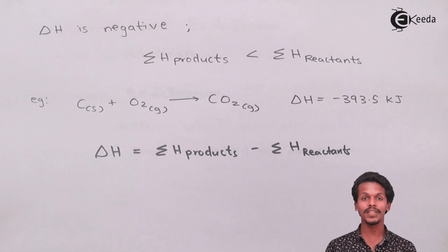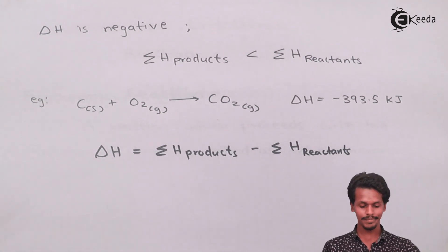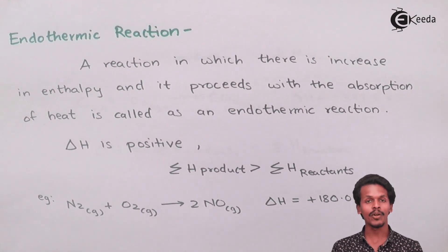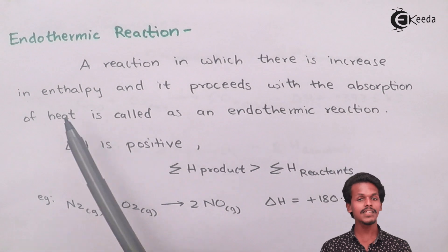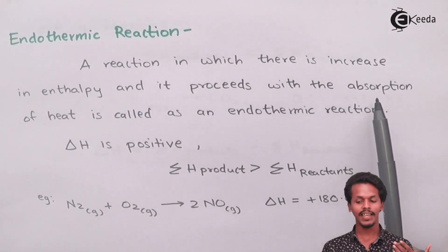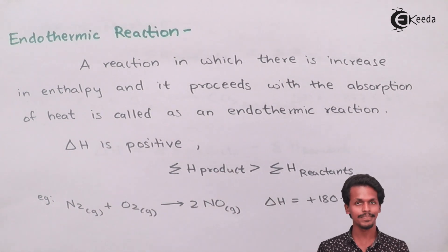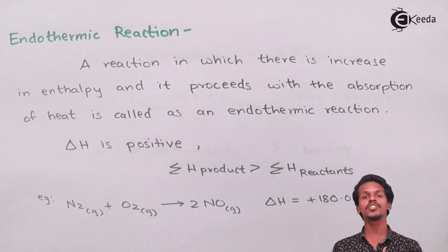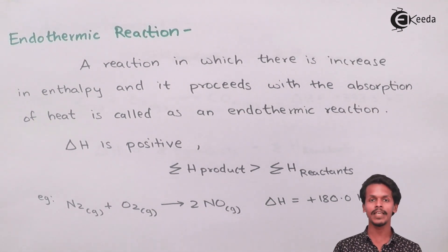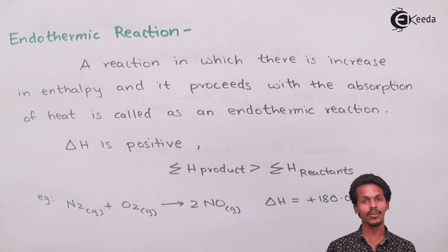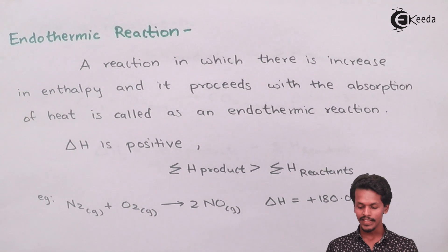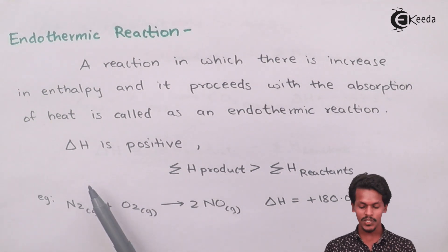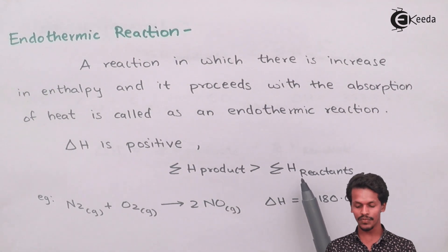Now let us talk about endothermic reaction. A reaction in which there is an increase in enthalpy and it proceeds with the absorption of heat is called an endothermic reaction. The enthalpy will increase only if energy has been provided to the system, making the product have more enthalpy value than that of the reactants. The heat of reaction will be positive only if the sum of H of products is more than the sum of H of reactants.